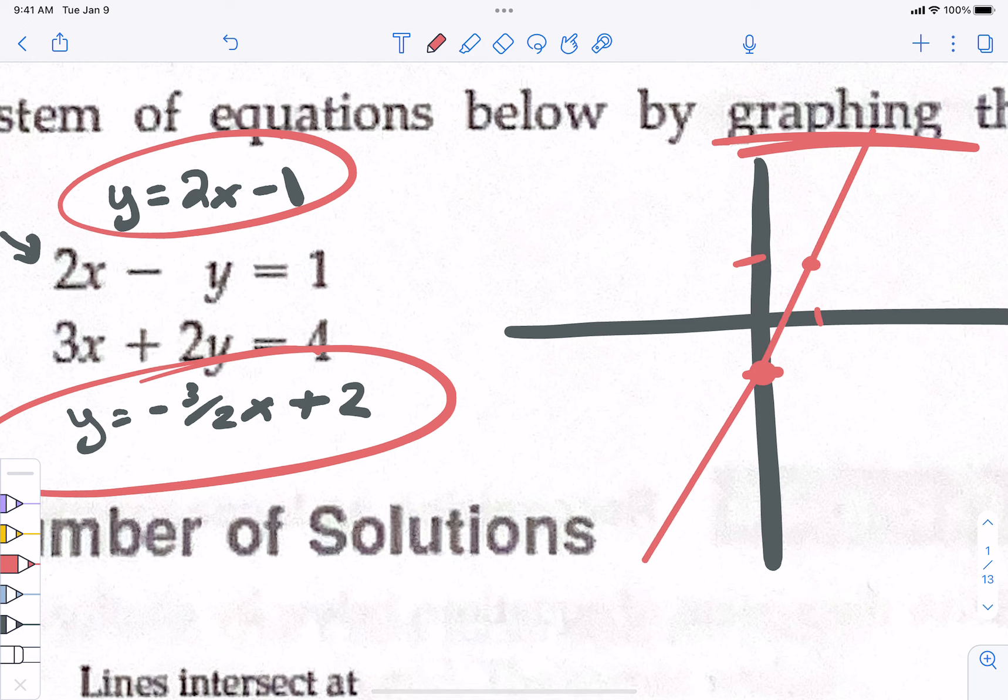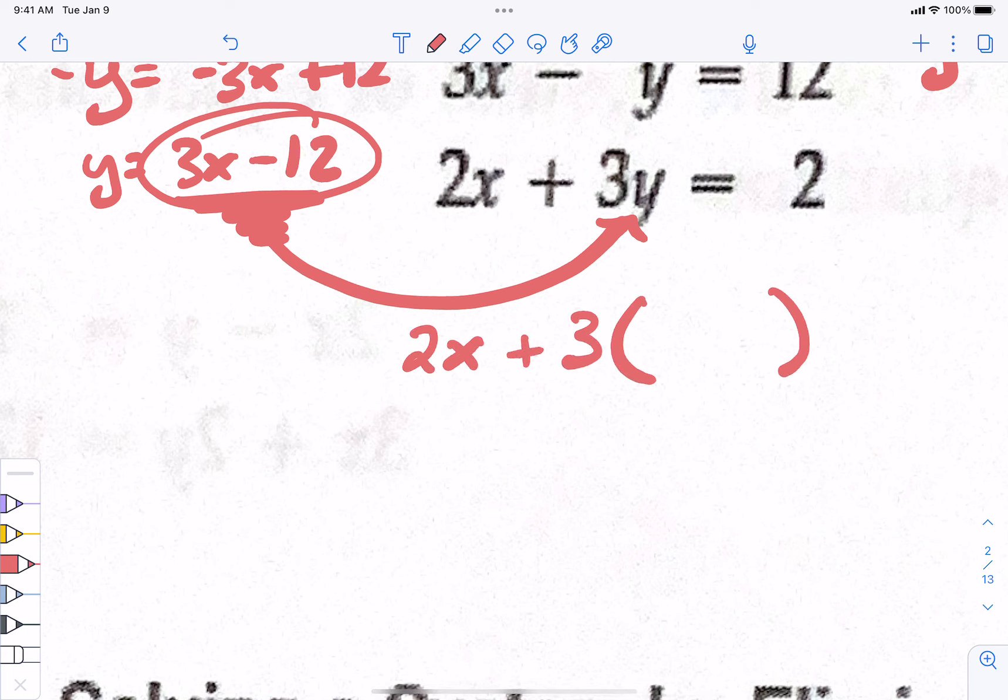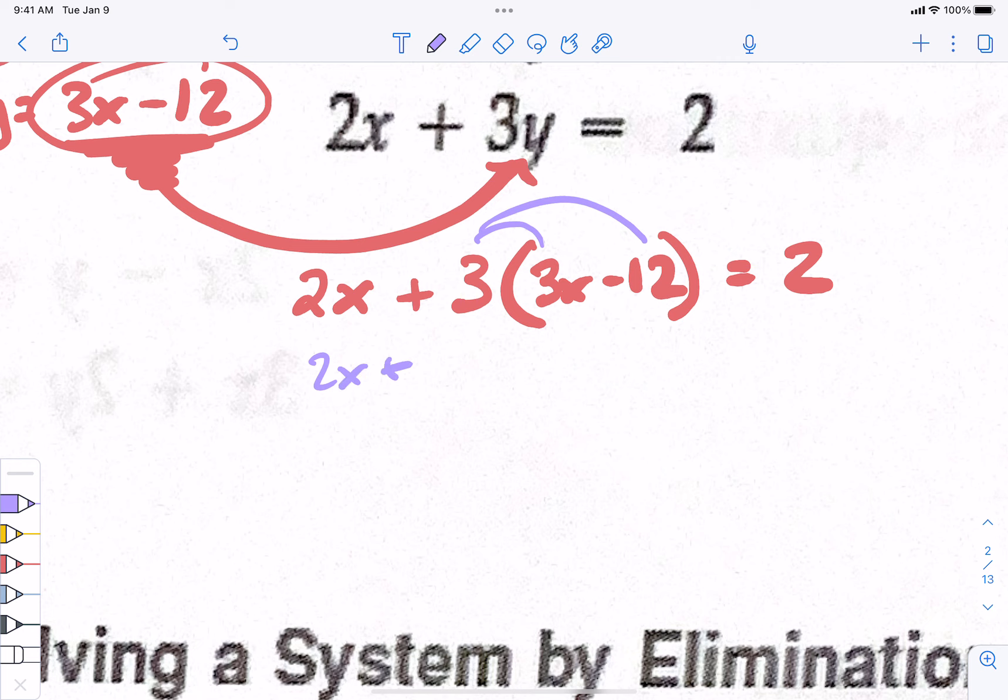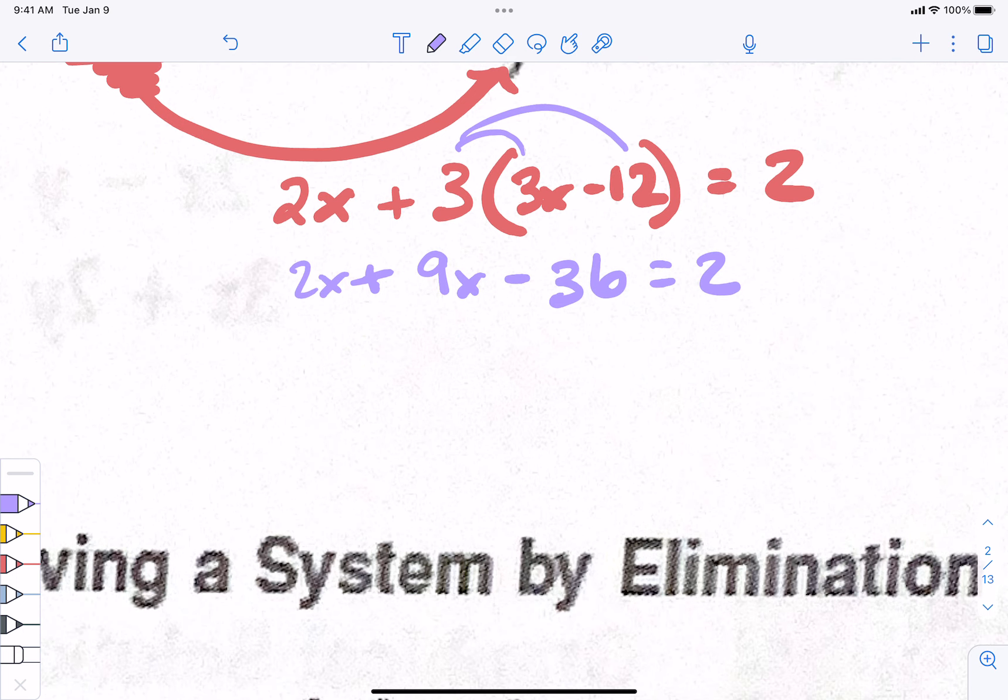Then you got 2x plus 3 and in parentheses 3x minus 12 equals 2. Good question. So she has negative y equals negative 3x plus 12, right? If you move the 3x over, and then divide by negative 1, so y equals positive 3x minus 12. Then, where does this thing go? Plug it in for 3y. In for the y, 3x minus 12. Now, distribute. 2x plus... distribute. Add the 36. 11x equals 38. And it's 3.45. Gross.